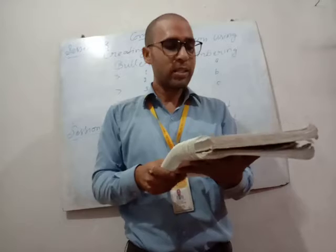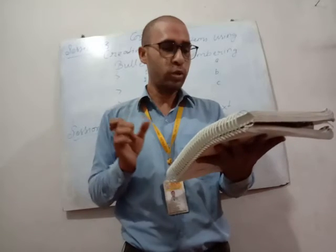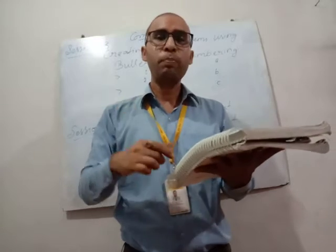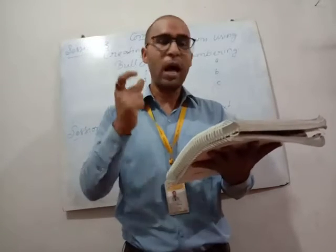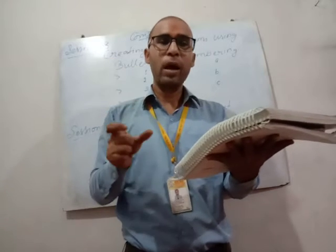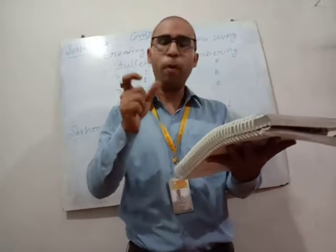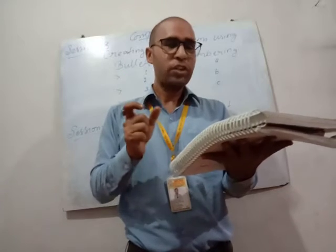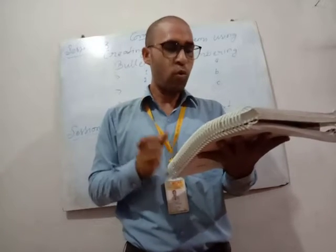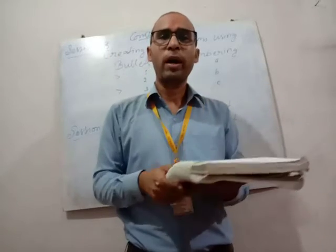How do we apply alignment? First, select a paragraph or text. Then click the alignment button. After you click, a dialog box appears with alignment options. In the general section, press OK. Whichever option you selected will be applied to the paragraph.